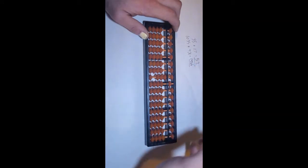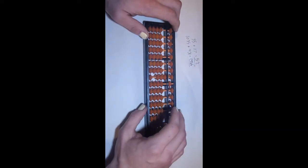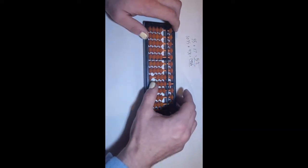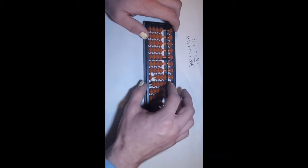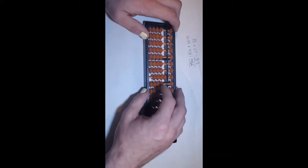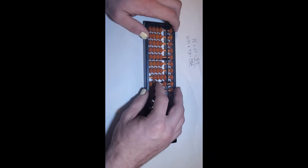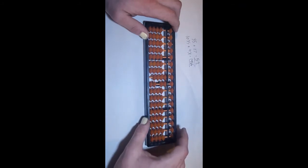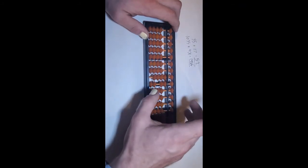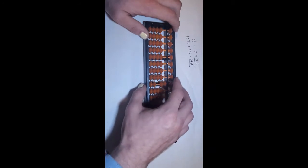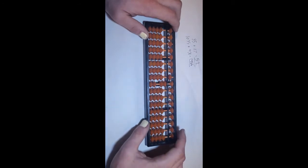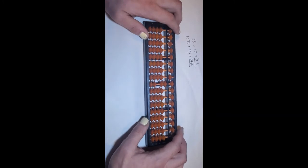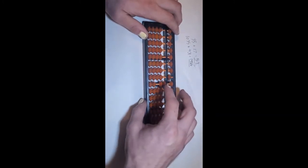So now we need to add 17 to that. So what we do is we can add four, five, six, seven to the ones, and then we add one to the tens column, and that can be done by bringing down the four and bringing down the Heaven counter, which represents five. And we're left with our answer of 52.